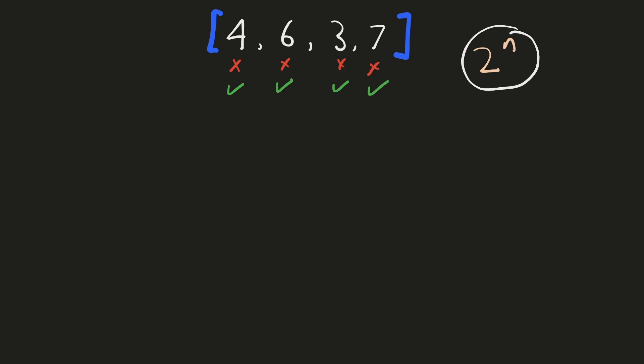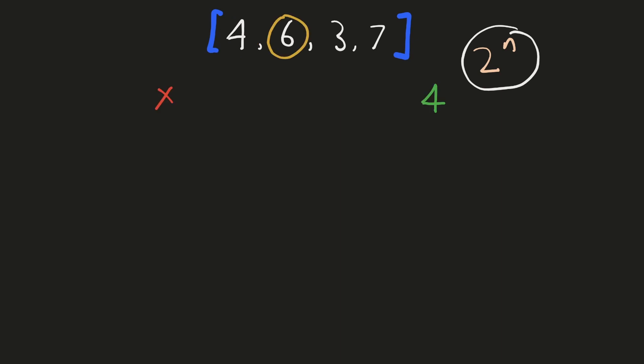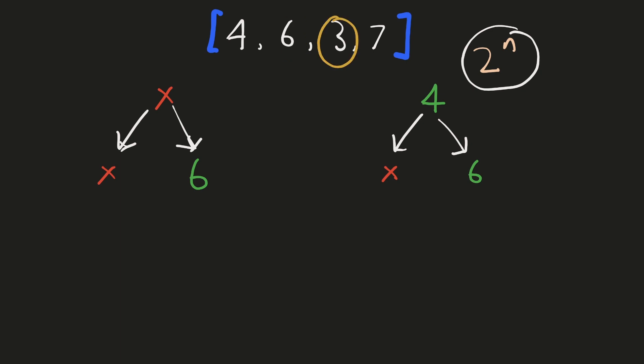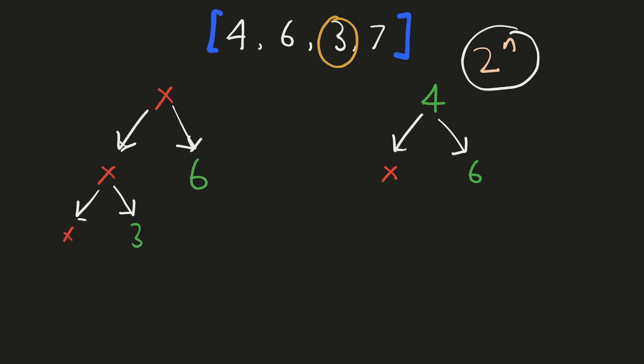Let's see how we can find all the different subsequences using a decision tree. Starting from the first number, we have two choices: whether to include it or not. Similarly, for our second element, for each of the previous choices we have made, we will have two new choices — we can choose to ignore it or begin our subsequence with it. Likewise, we will have two choices for 6: we can ignore it or include it. Now when we consider the next element 3, we see that it is smaller than both 6 and 4, and since we want our subsequence to be non-decreasing, we cannot include it after them. So in this case, we just have two choices: ignore it or begin our subsequence with 3.